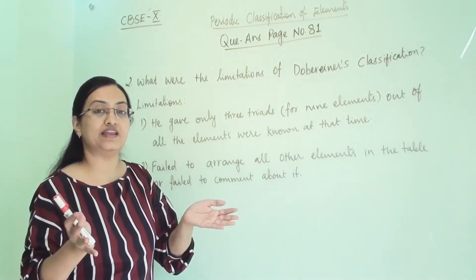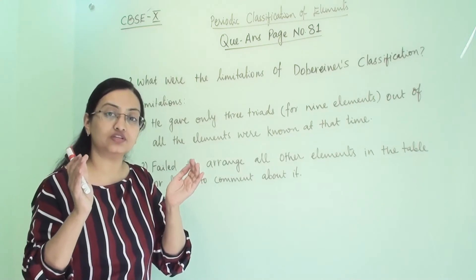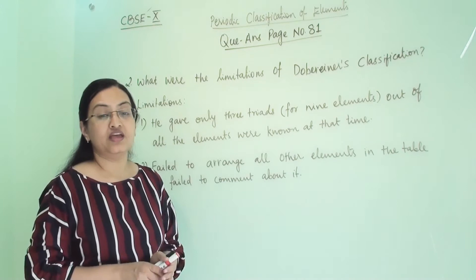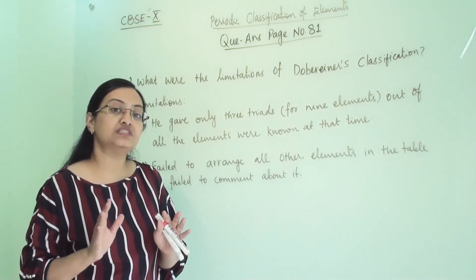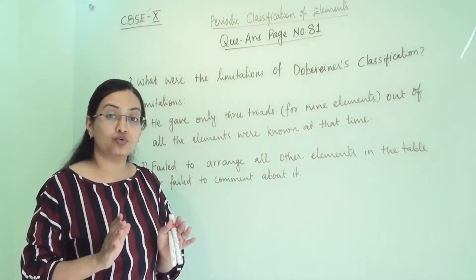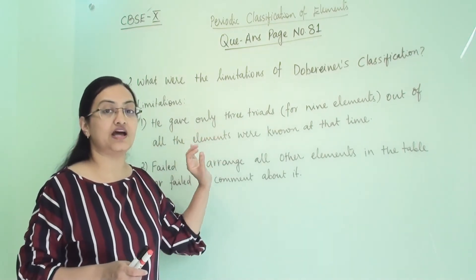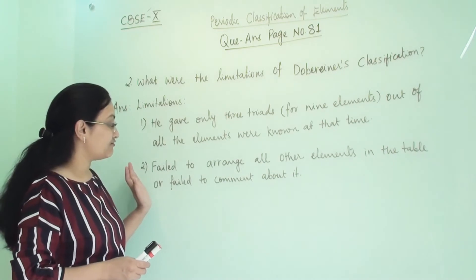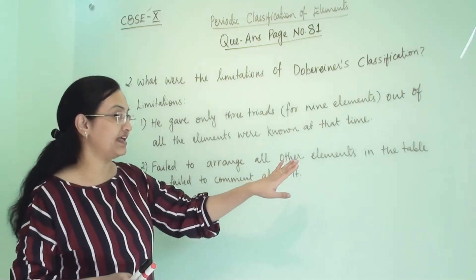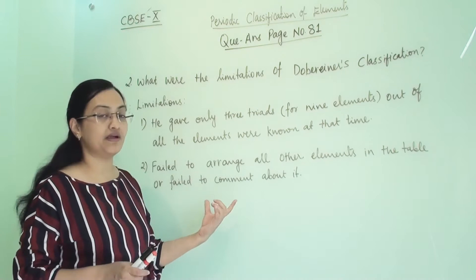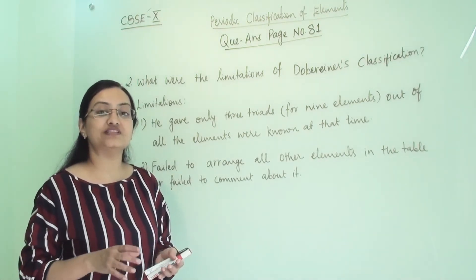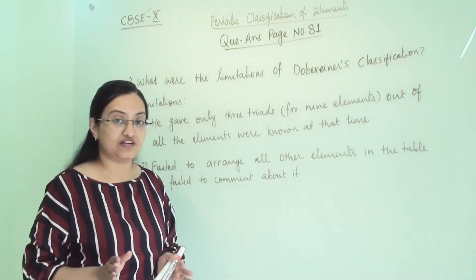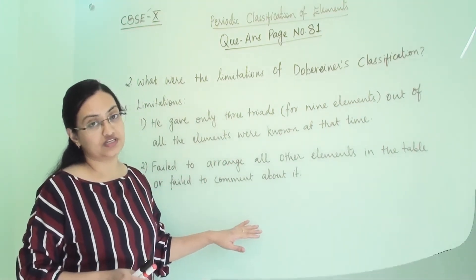His complete arrangement was only for nine elements. At that time almost 56 elements were known, but out of those he could arrange only nine into his triads. The second limitation is that he failed to arrange all the other elements or comment about them — he could not suggest anything about the remaining elements.